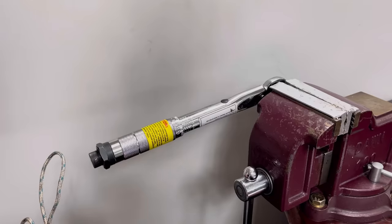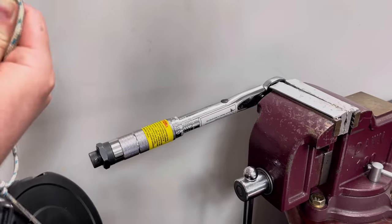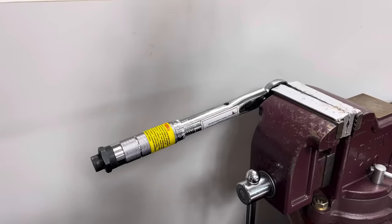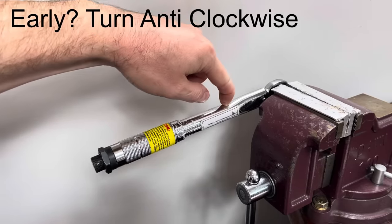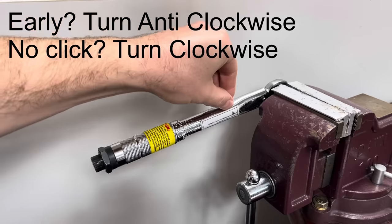It clicked a little bit too early. I still had hold of this weight, and we just need to note that if the torque wrench clicks early, then we need to turn this little screw anti-clockwise, and if we don't hear a click, we need to turn it clockwise.